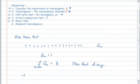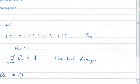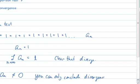So this is like a quick test. The test basically says that if you do just a simple limit on the nth term, and if you find out that the limit is anything other than zero, you can only conclude divergence.